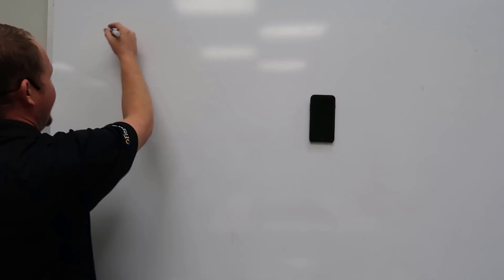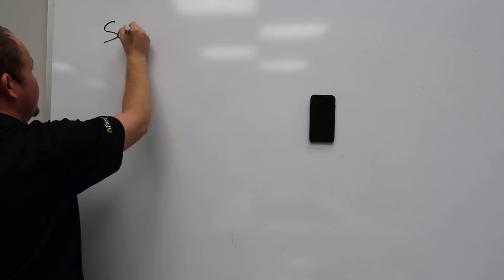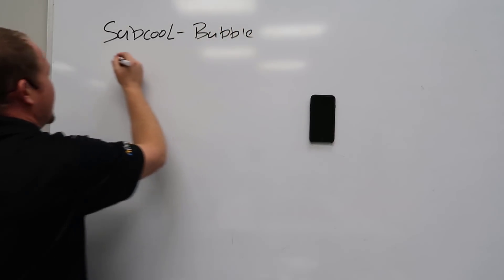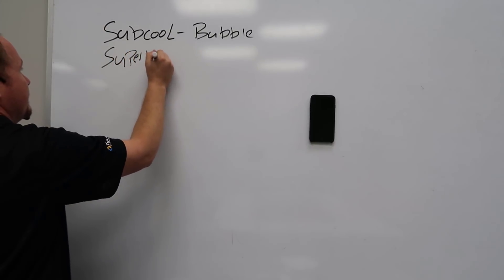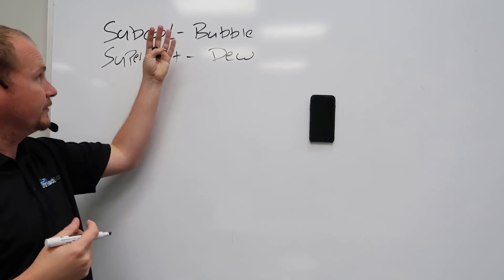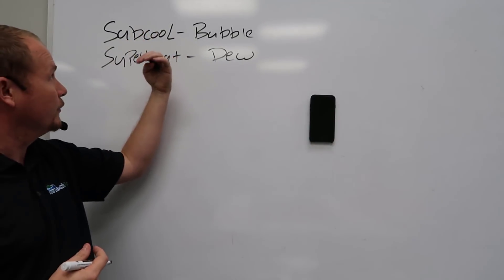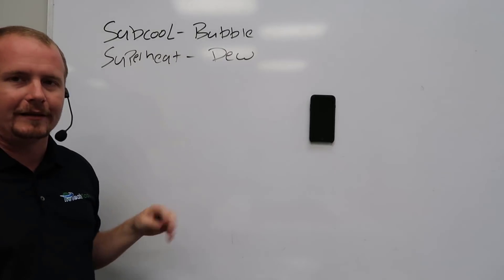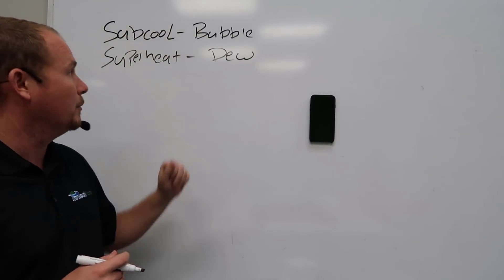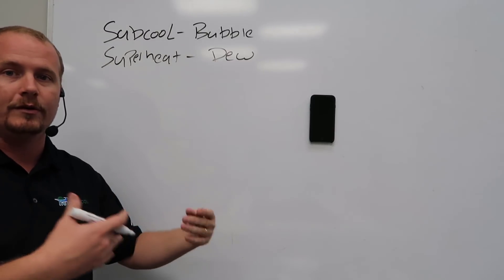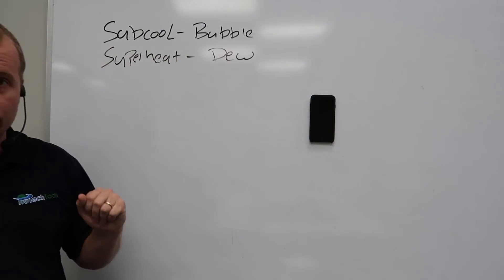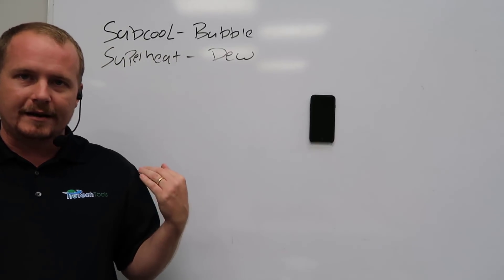This is what most technicians know: for subcooling, we use bubble point, and for superheat, we use dew point. The way I remember it is that when we think of subcool, we know subcooling is a subcooled liquid, and bubbles can appear in liquid. You don't see bubbles in a vapor, you see bubbles in a liquid. So subcooling is where we use bubble point. Superheat is dew point. Where do you see dew? You don't see dew in a liquid, you see dew in a vapor. You see dew in the air. Dew comes out of the air and onto the grass or whatever. So superheat is dew point.